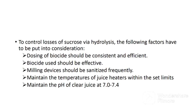To control losses of sucrose via hydrolysis, the following factors have to be put into consideration. Number one, dosing of biocide should be consistent and efficient. Number two, the biocide used should be effective — it should be able to kill destructive microorganisms in extracted juice. Number three, milling devices like rollers, trash plates, and pumps should be sanitized frequently to remove layers of microorganisms which might affect the extracted juice. Number four, the temperatures of juice heaters should be maintained within set limits to ensure invertase enzymes and microorganisms in the juice are killed. Finally, the pH of clear juice should be maintained between 7.0 and 7.4, as low pH leads to hydrolysis.